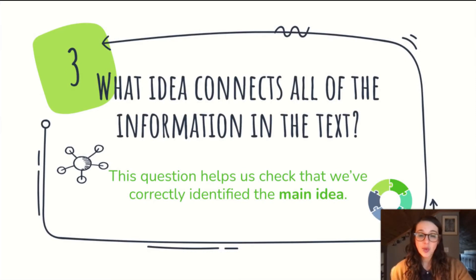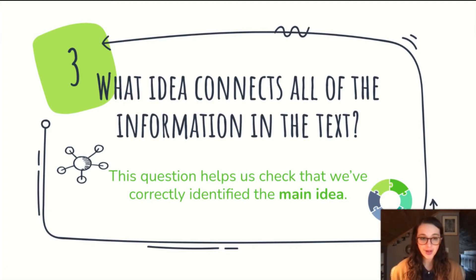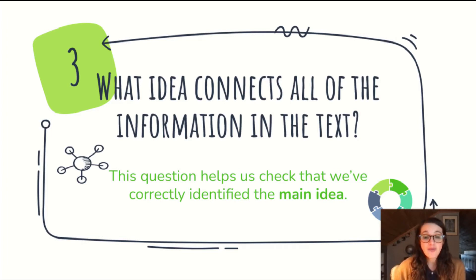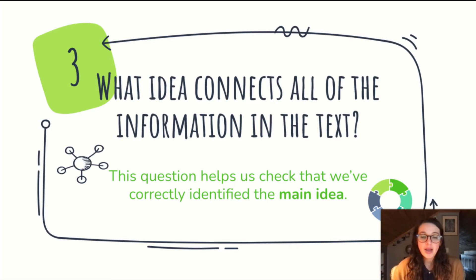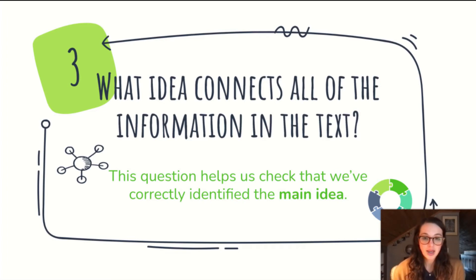The last question — what idea connects all of the information in the text? — can help us if we're stuck and can't figure out what the author wants us to know. It can also help us check that we've correctly identified the main idea. So if I've identified the main idea as 'earthquakes can be really dangerous for communities that live along fault lines,' I can go back and make sure all the information the author chose to include connects back to that idea. Then I know I've correctly identified the main idea.